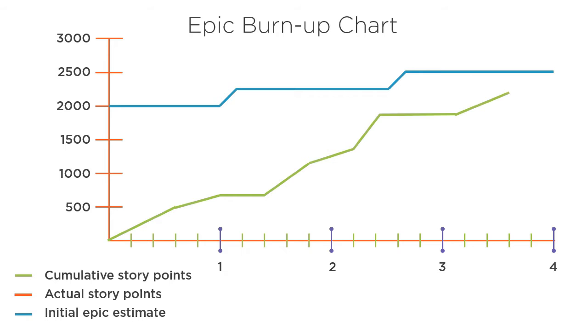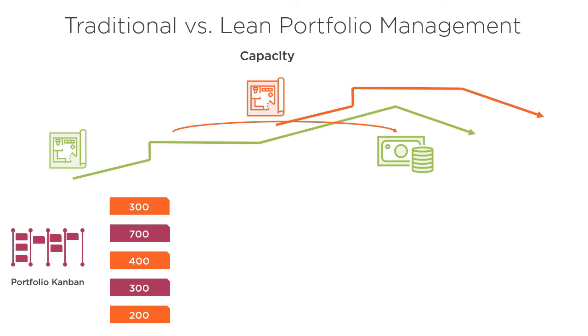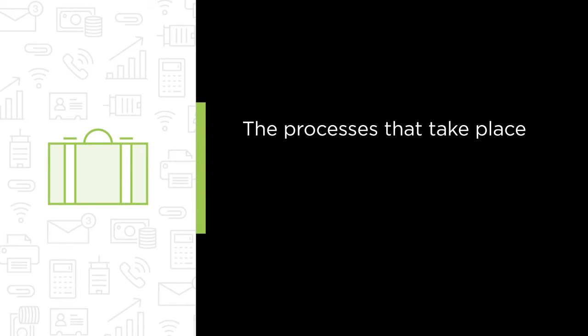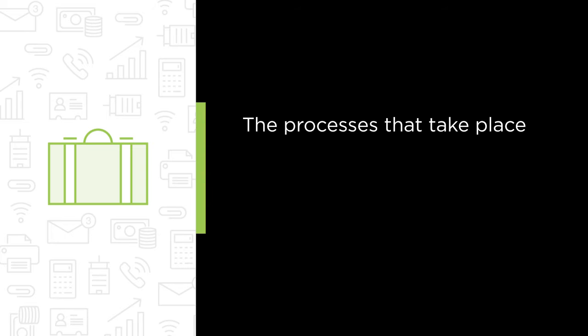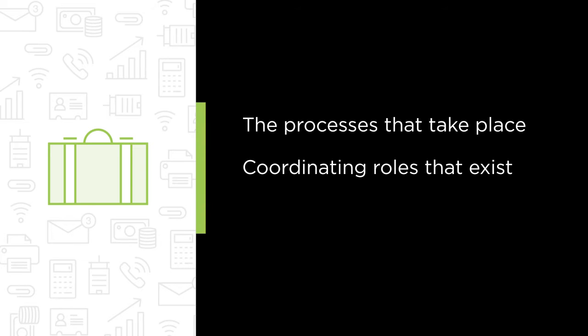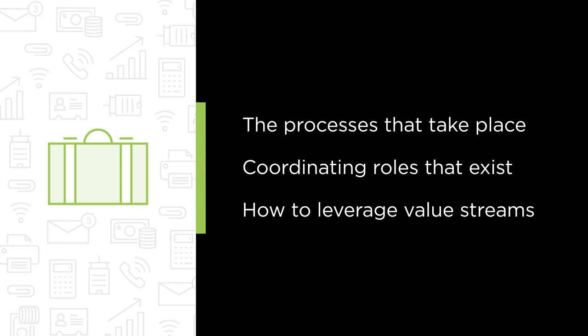This course will teach you the processes, roles and coordination mechanisms to help leverage the economics of scale that come with a large agile organization. Specifically, we will look at the processes that take place on the portfolio level, the coordinating roles that exist on the portfolio level, and finally how to leverage value streams to guide the flow of value through your organization.